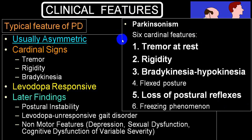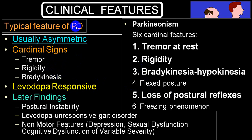Among clinical features: tremors, rigidity, and loss of postural reflexes are classical. Two more are added — flexed posture and freezing phenomena. The four classical features are described as TRAP: Tremor, Rigidity, Akinesia, and Postural instability. When it is levodopa-responsive, it is classified as Parkinson's disease. It is asymmetric, and as time passes, levodopa becomes less responsive. Non-motor features include depression, sexual dysfunction, cognitive dysfunction, speech disturbances, and visual disturbances.